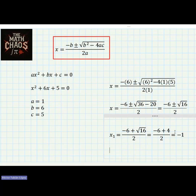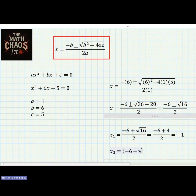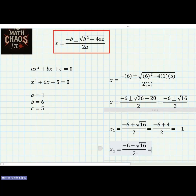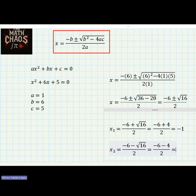Now we find the second result, x₂, using the minus sign. We have negative six minus the square root of sixteen, all over two. The square root of sixteen is four, so this is negative six minus four, all over two. Negative six minus four equals negative ten, and negative ten over two equals negative five.